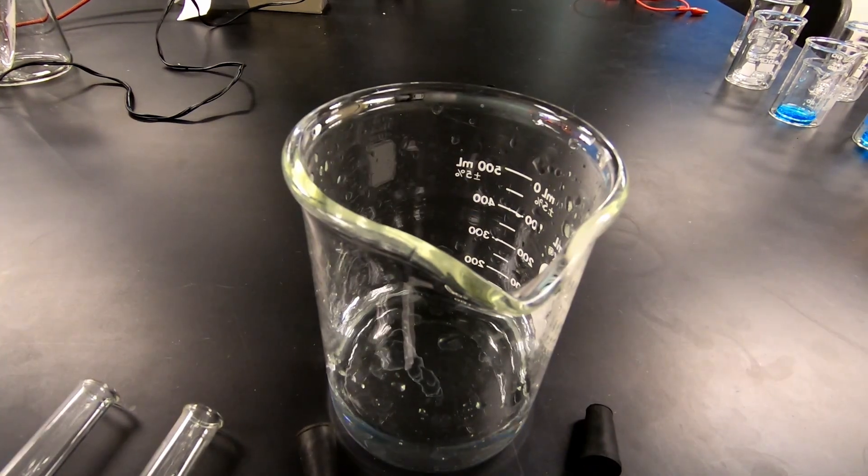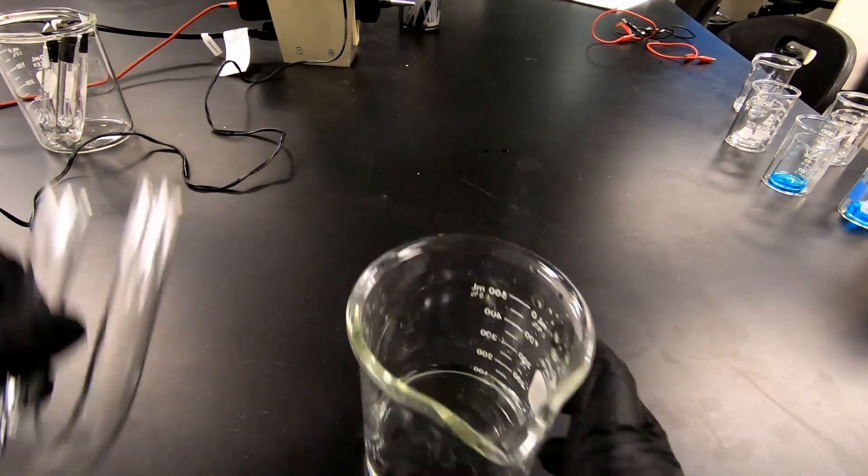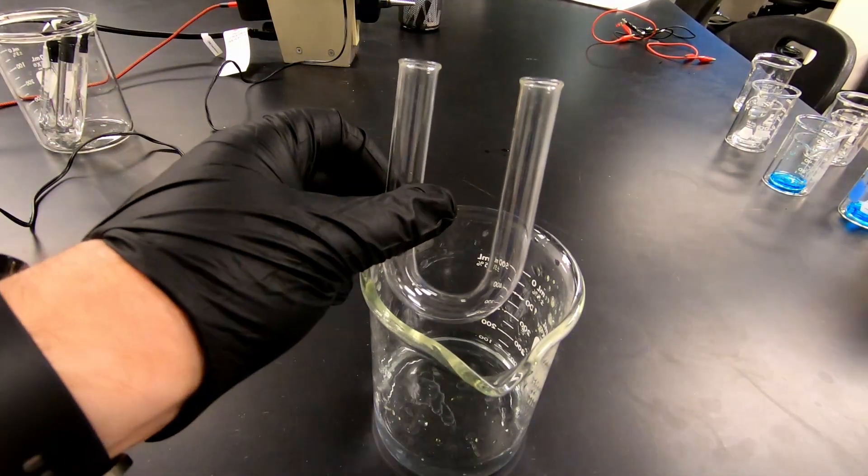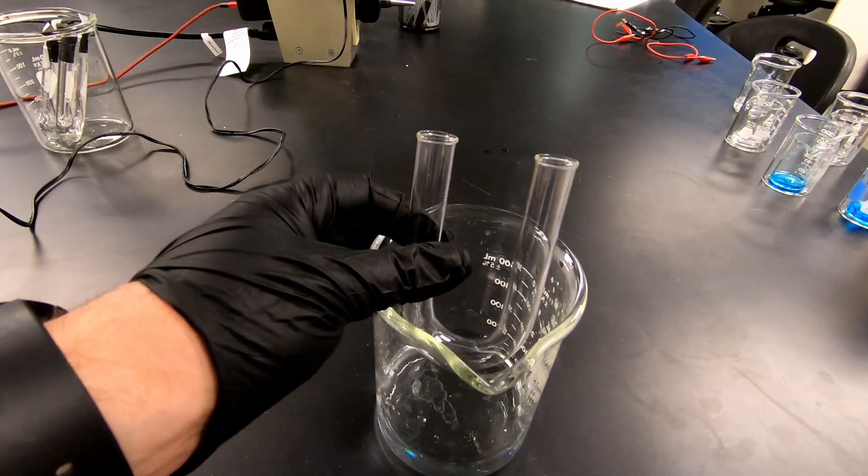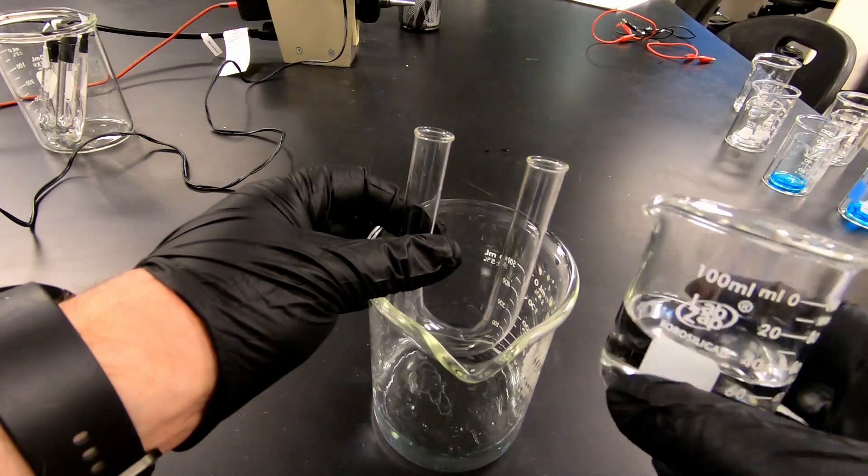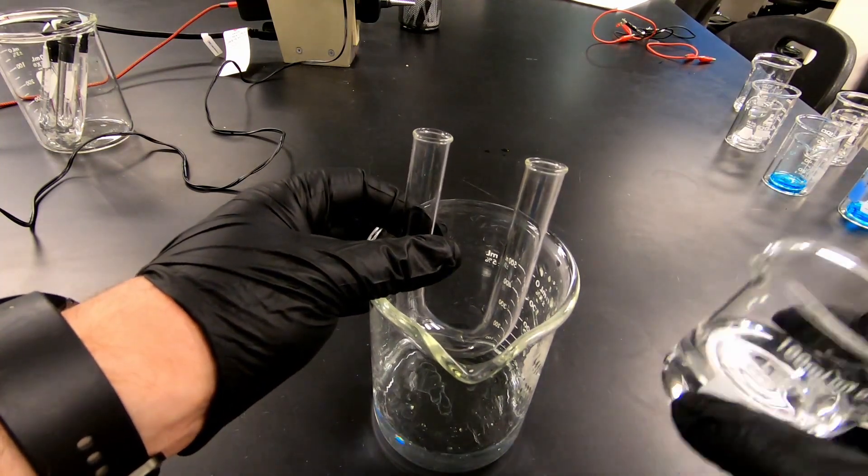So what I want to do first is fill our U-tube with our salt for the salt bridge. Just to help with spills, do it over your waste beaker and take your secondary container of your salt. You're using sodium sulfate.